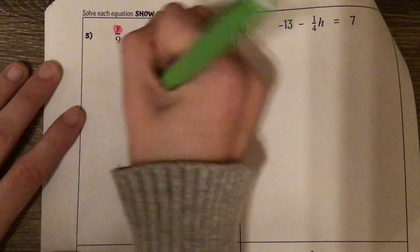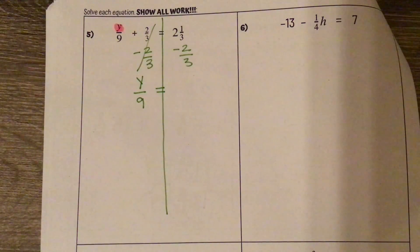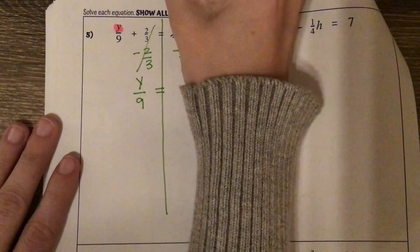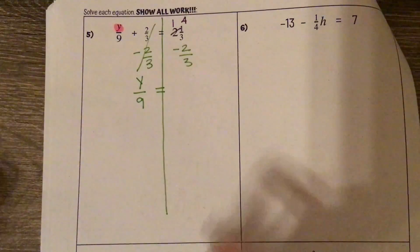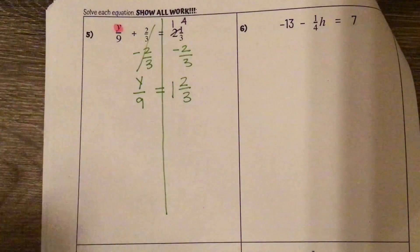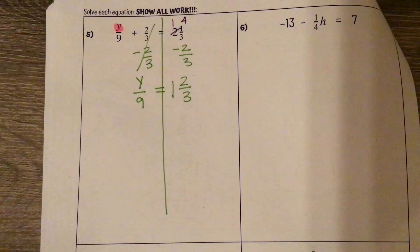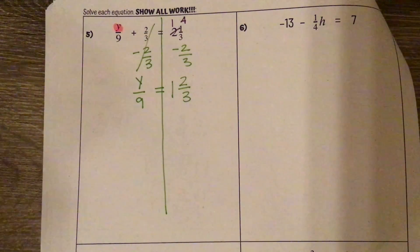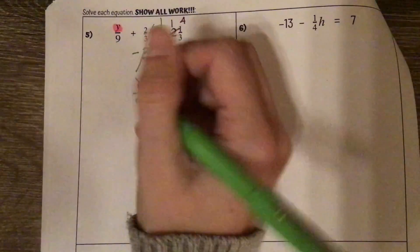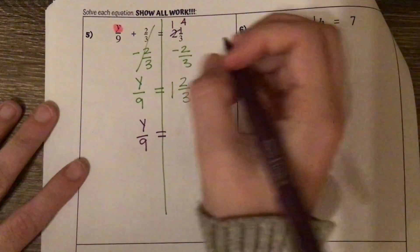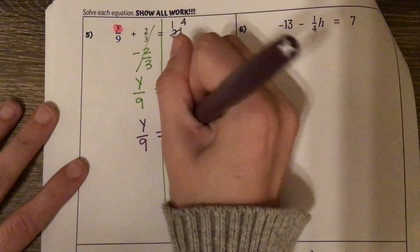I get y over 9 equals. We can't do 1 minus 2, so we borrow — the 2 becomes 1, and 1 plus 3 is 4 thirds. So we get 4 minus 2 is 2 thirds, and 1 minus 0 is 1. Now y is being divided by 9, so the opposite is to multiply. Before I do that, I'm going to rewrite this as an improper fraction: y over 9 equals 1 times 3 is 3, plus 2 is 5 thirds.